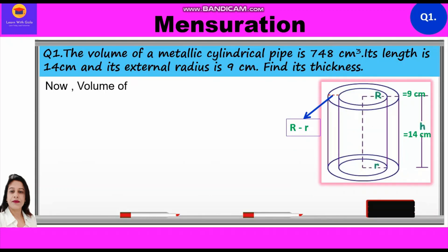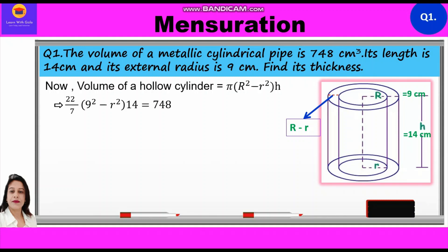Volume of hollow cylinder = π(R² − r²)·h. Substituting the values: (22/7) × (9² − r²) × 14 = 748. Cross-multiplying, we get 81 − r² = 748 divided by (2 × 22).